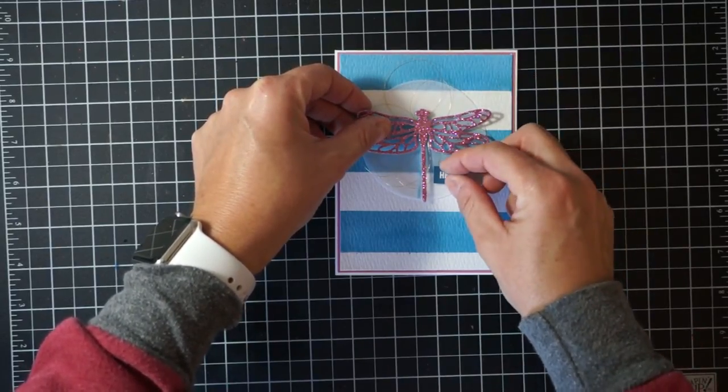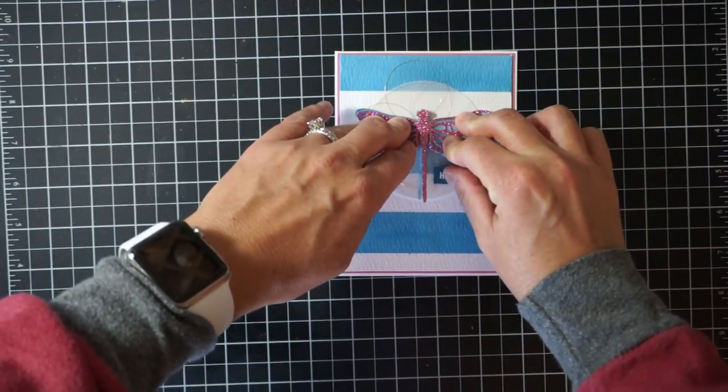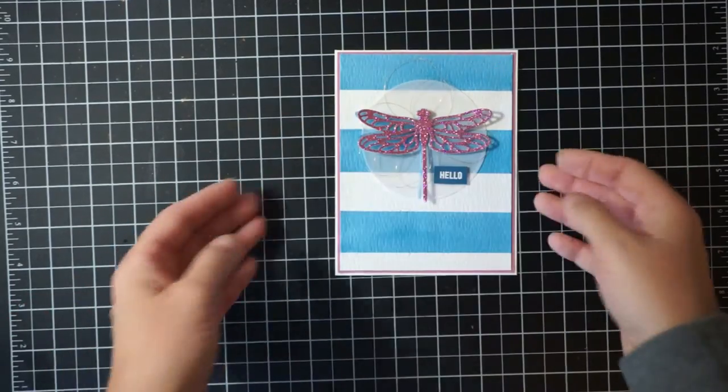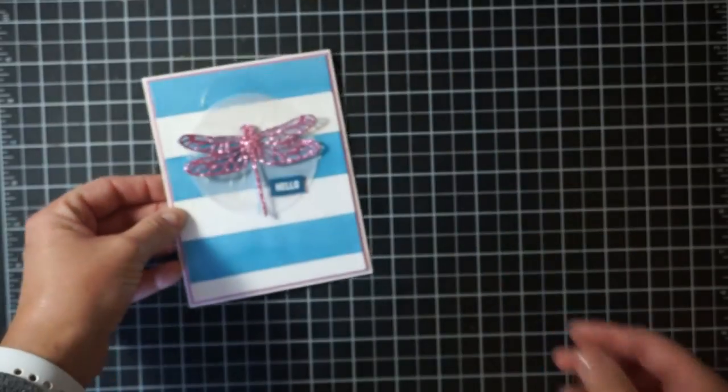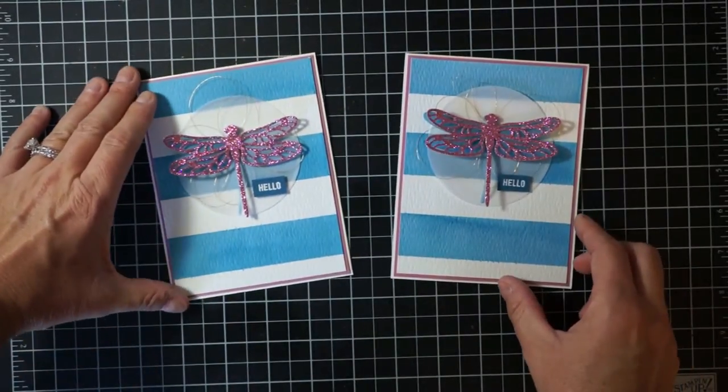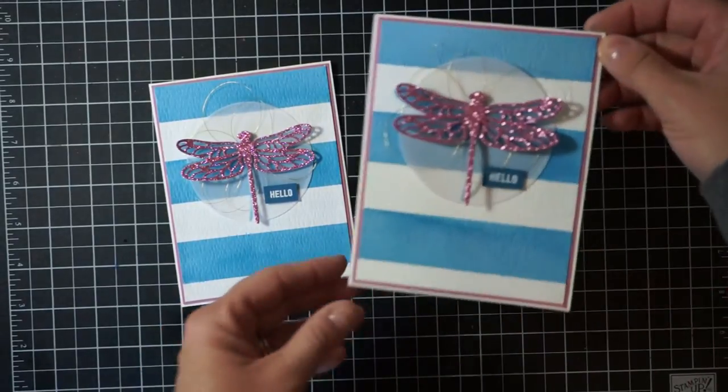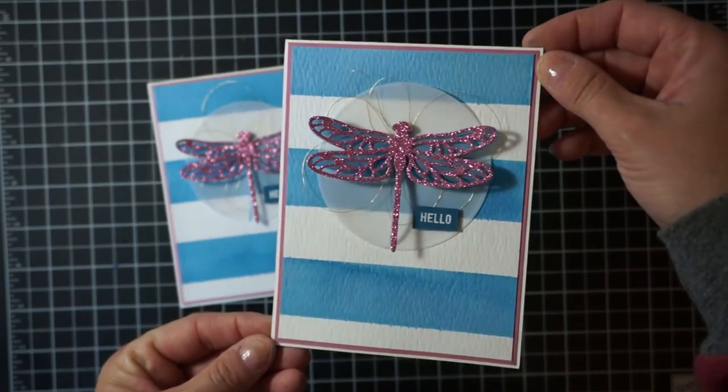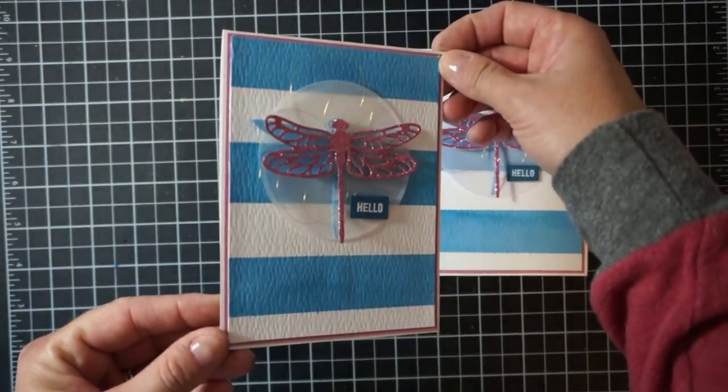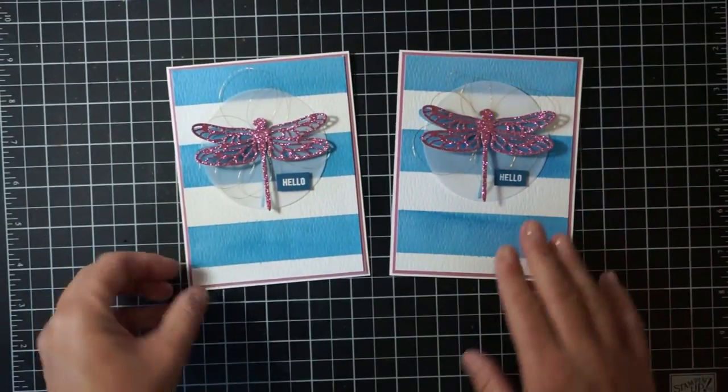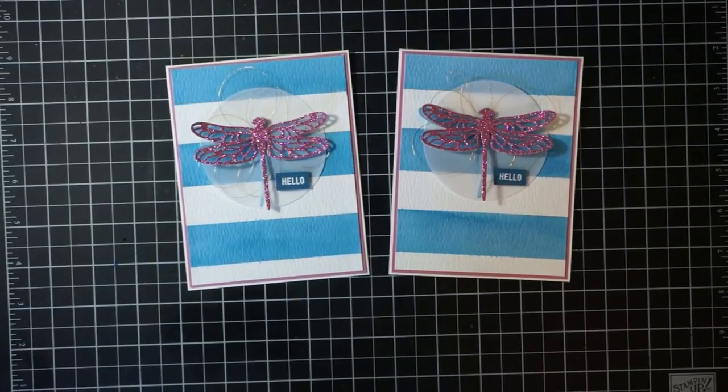So once you glue that on that finishes the card. So this was a super simple card but I really love how it turned out. That watercolor background was exactly what I was going for when making this card and I love it. I think it's really gorgeous and that glimmer paper is just absolutely gorgeous. I'm sorry that it's sold out and you can't get any anymore but definitely check out the other glimmer paper that Stampin' Up has all the time. So thank you guys for joining me today. If you have any questions you can hop over to my blog at www.thestampcycle.com and I'll catch you guys on the next video. Thanks bye.